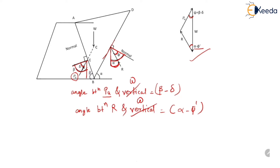We can easily obtain the third angle of the force triangle as 180 minus (beta minus delta) minus (alpha minus phi-dash).